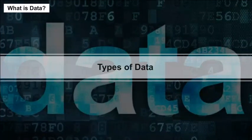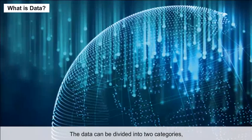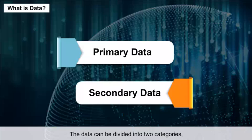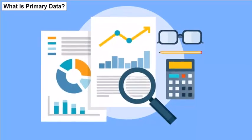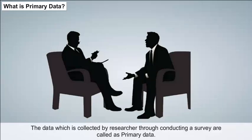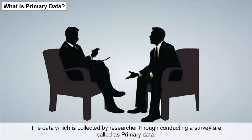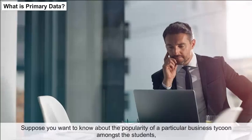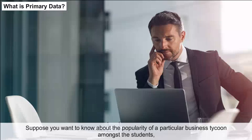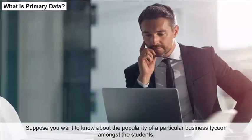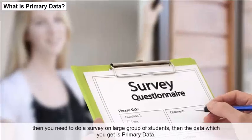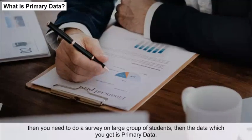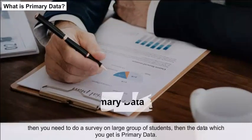Types of Data. Data can be divided into two categories: primary data and secondary data. Primary data is data collected by a researcher through conducting a survey. For example, if you want to know about the popularity of a particular business tycoon amongst students, you need to do a survey on a large group of students — the data you get is primary data.